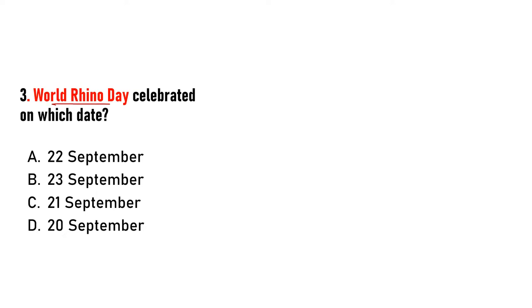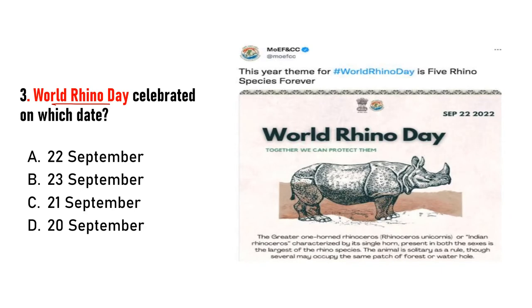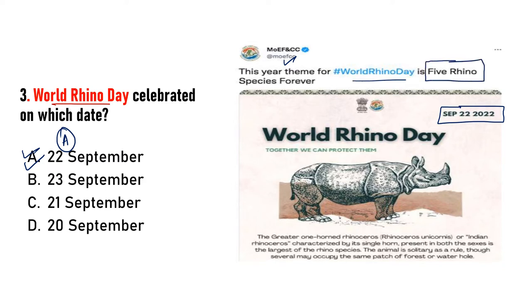Next question: World Rhino Day kab celebrate kiya jaata hai — 22 September, 21, ya 20? Answer will be 22 September. Aap dekh sakte hain Ministry of Environment ka tweet — World Rhino Day. Duniya mein basically 5 rhino ki species hoti hain, aap inko check out kar sakte hain.